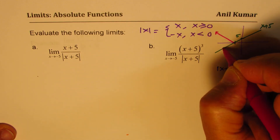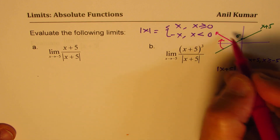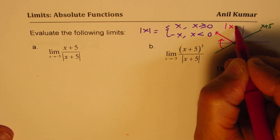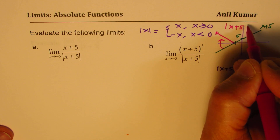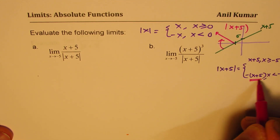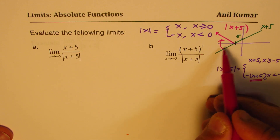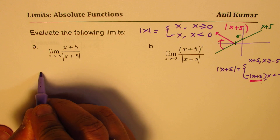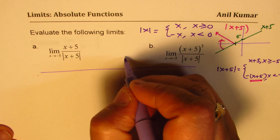The negative portion gets reflected, giving us absolute value of (x+5). That negative portion — negative of (x+5) — gets reflected on the x-axis. Since absolute functions are piecewise functions, we should always solve this type of question in two parts.